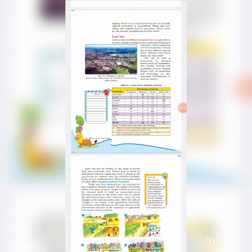Land can also be classified into private lands and community lands on the basis of ownership. Private land is owned by an individual person, whereas community land is owned by the community for common uses such as the collection of fodder, fruits, nuts, and medicinal herbs. Another name for communal lands is common property resources. Even though people's demands are ever growing, the availability of land is limited, thus leading people to encroach on lands to build commercial areas such as shopping complexes in urban areas, and to expand agricultural lands in rural areas.